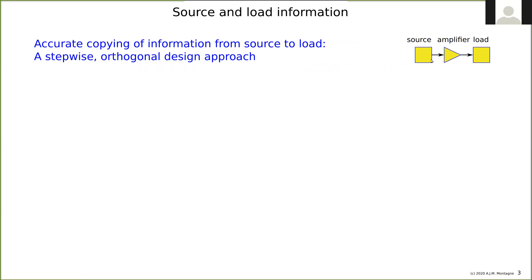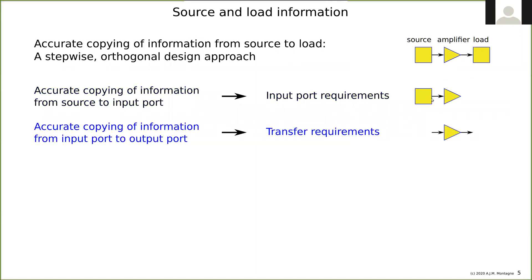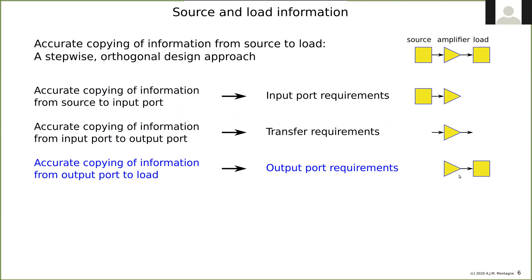We have a source, an amplifier, and a load, with transfer from source to amplifier and from amplifier to load. As engineers, we make complex problems less complex by cutting them into pieces. First, we look at the input port requirements (source to amplifier), then the internal transfer (input to output), and finally the output port requirements for optimum transfer of information to the load.